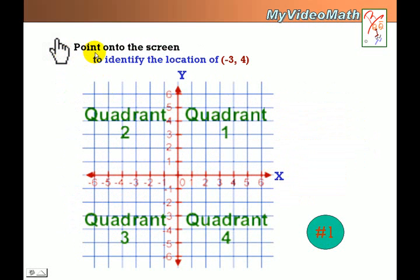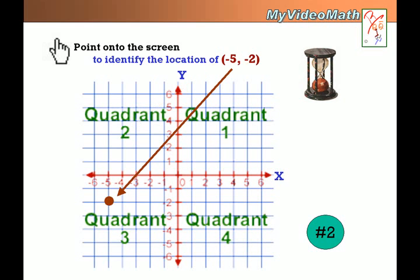Point your finger on the screen to identify the location negative 3, 4. Negative 3, and 4. You got it? Okay. And now, next example, please point your finger on the screen to see whether you can identify the location. Do you got it right?